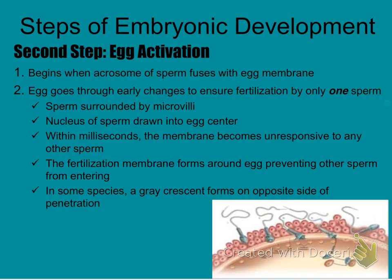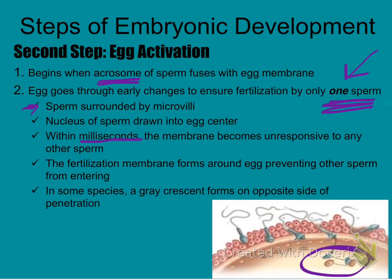The second step is egg activation — this is after the acrosome, which is the head part of the sperm, fuses with the egg membrane. The egg goes through early changes very quickly to make sure only one sperm is fertilizing the egg, because there would be a lot of problems with more than one sperm. The sperm immediately gets surrounded by microvilli, then the nucleus of the sperm is drawn into the egg center. Within milliseconds, the membrane becomes unresponsive to any other sperm, and a membrane actually forms around the egg to prevent other sperm from entering.